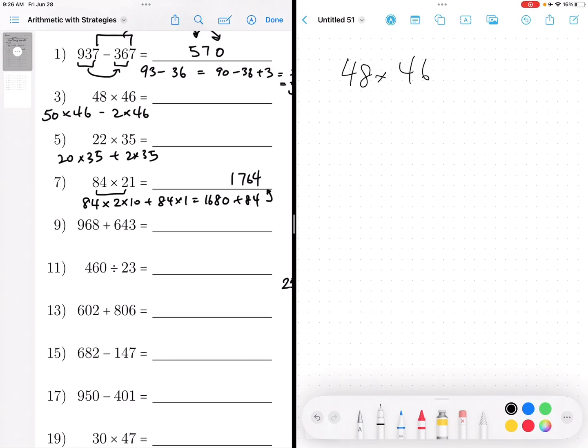We could just simply do the math. But if you say, if you just do 50 times 46, I'm doing 2 more of 46. What if I just subtract 2 of these? And then I can kind of do this.